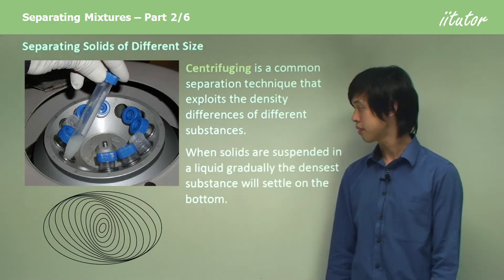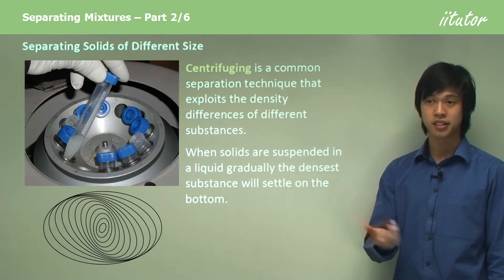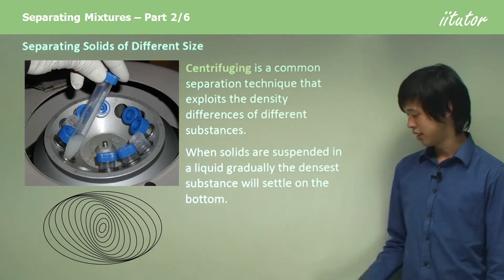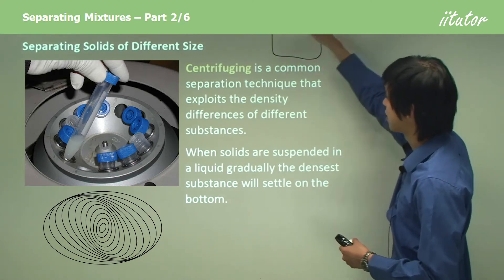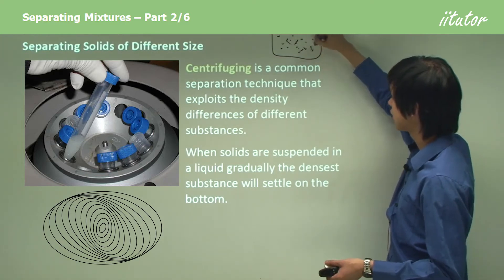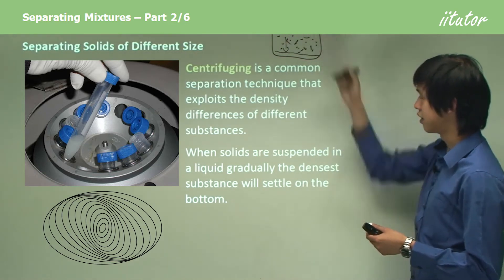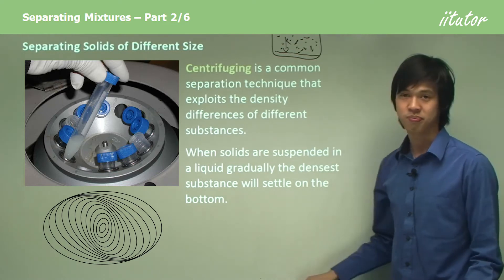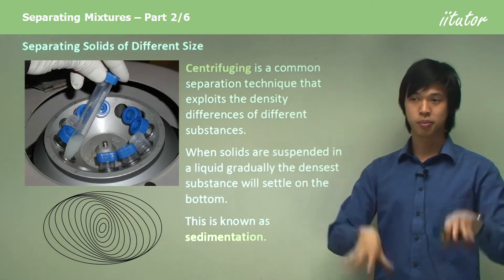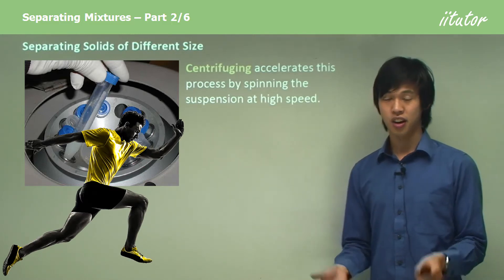In centrifuging, we exploit the fact that some particles are naturally more dense than others. When you have a solid suspended in a liquid — like how blood cells are suspended in blood — the denser substance will gradually settle to the bottom. If you shake up a container with sand in it, eventually all of the sand will drop to the bottom and settle. We call this sedimentation.